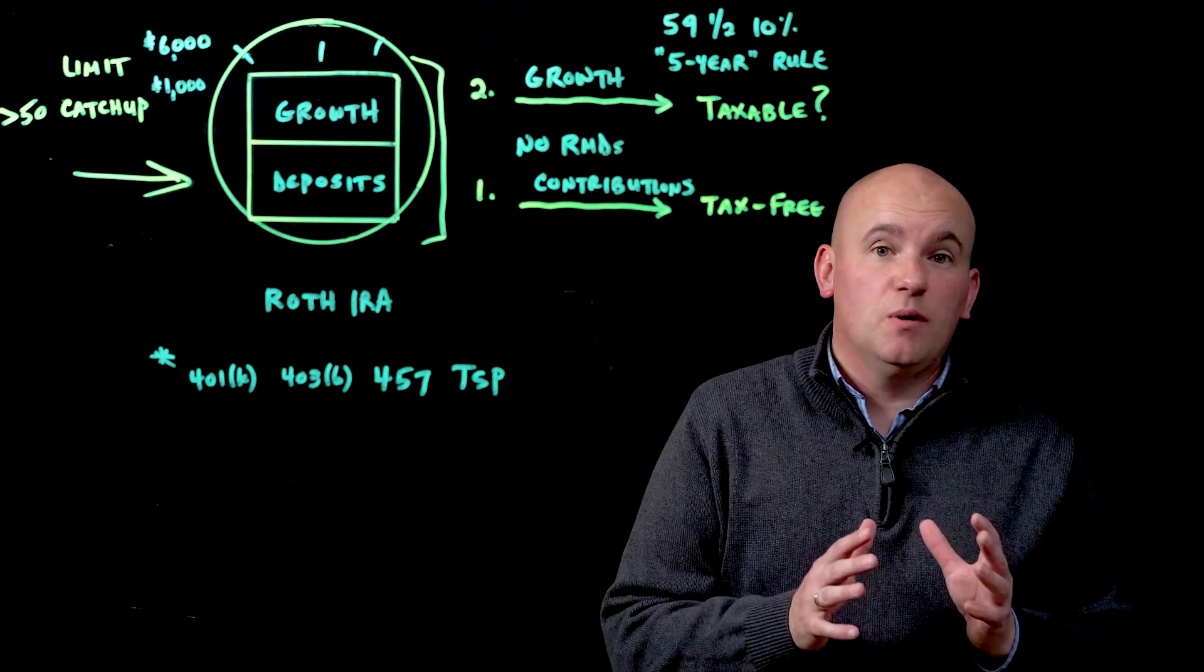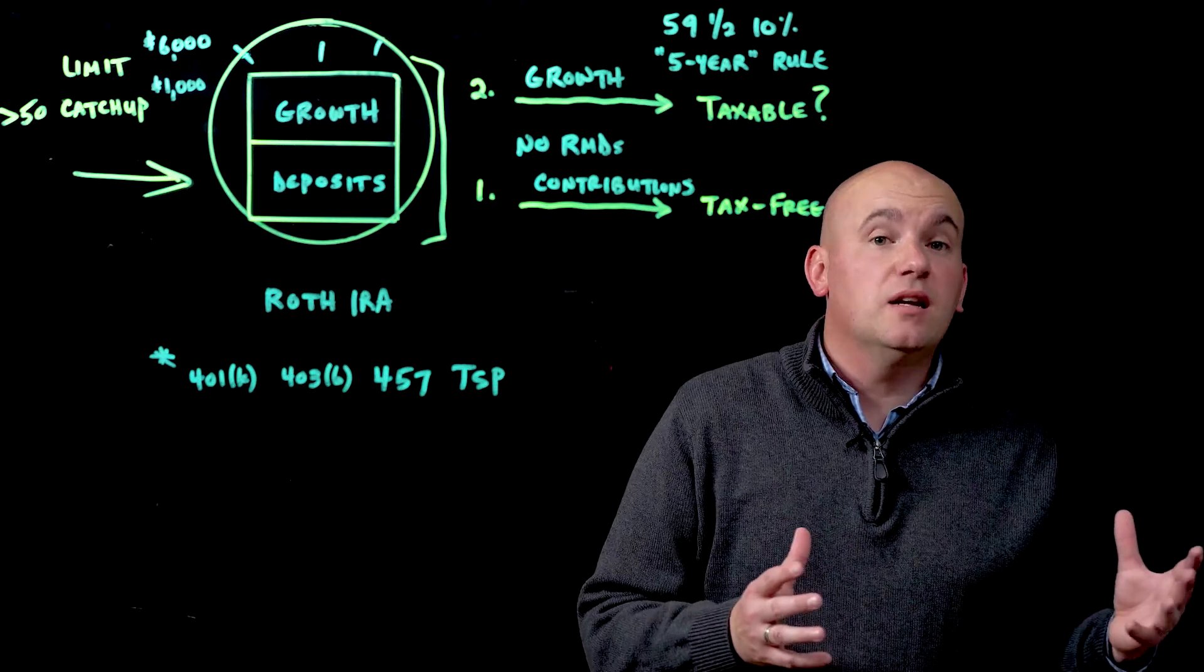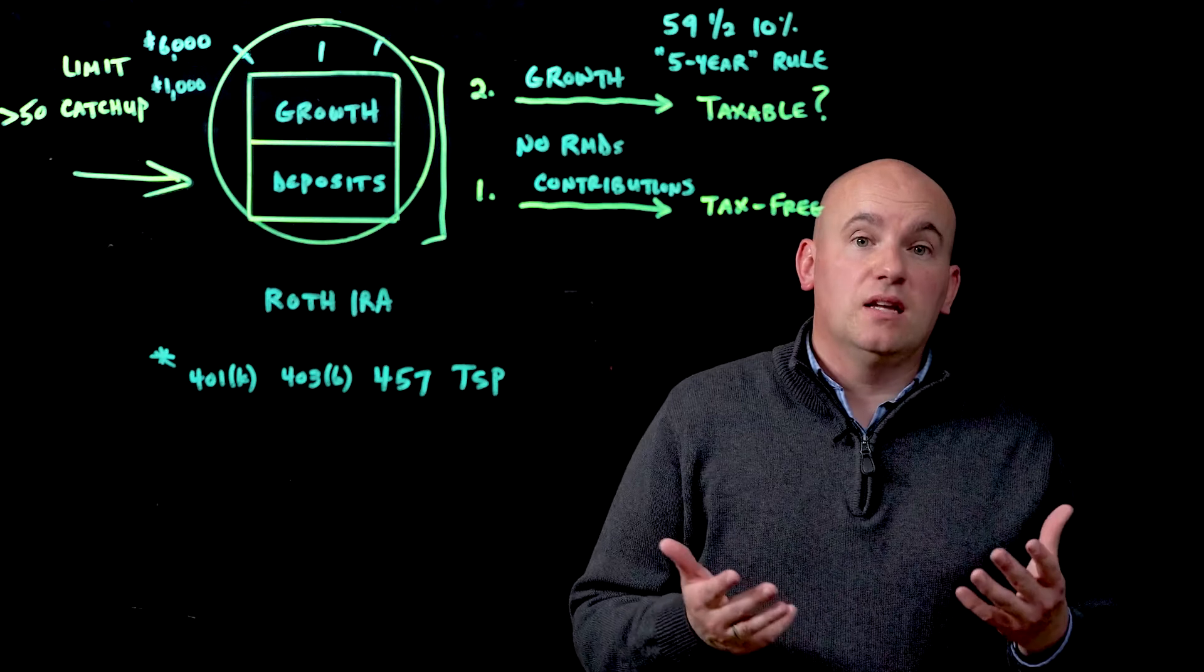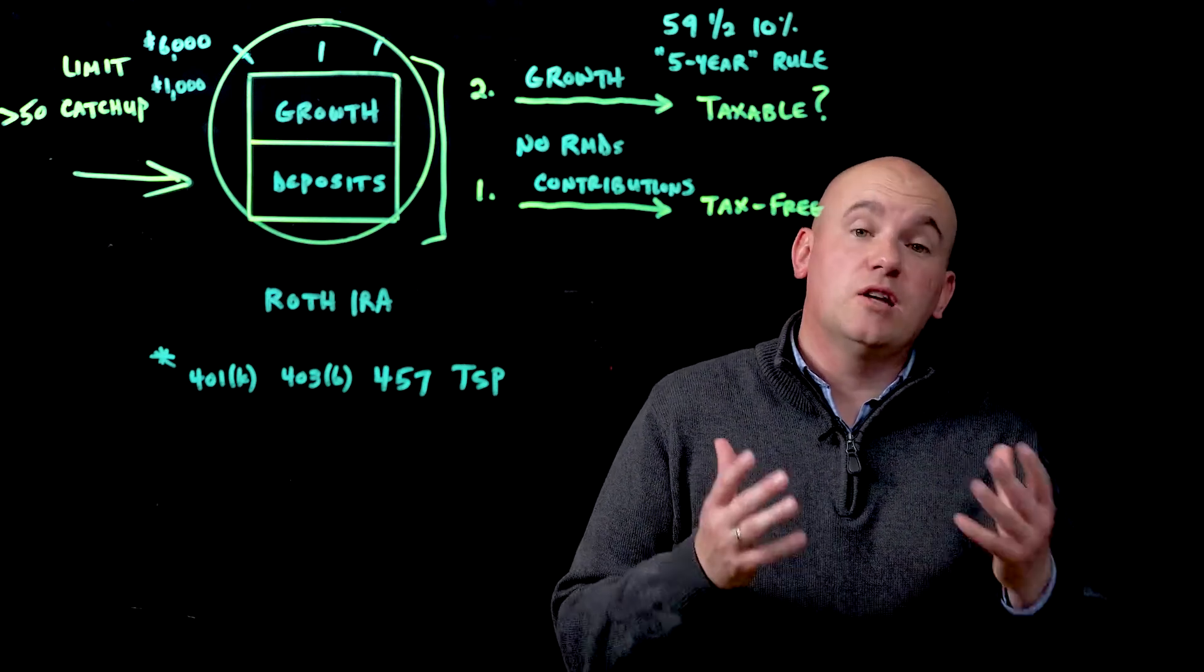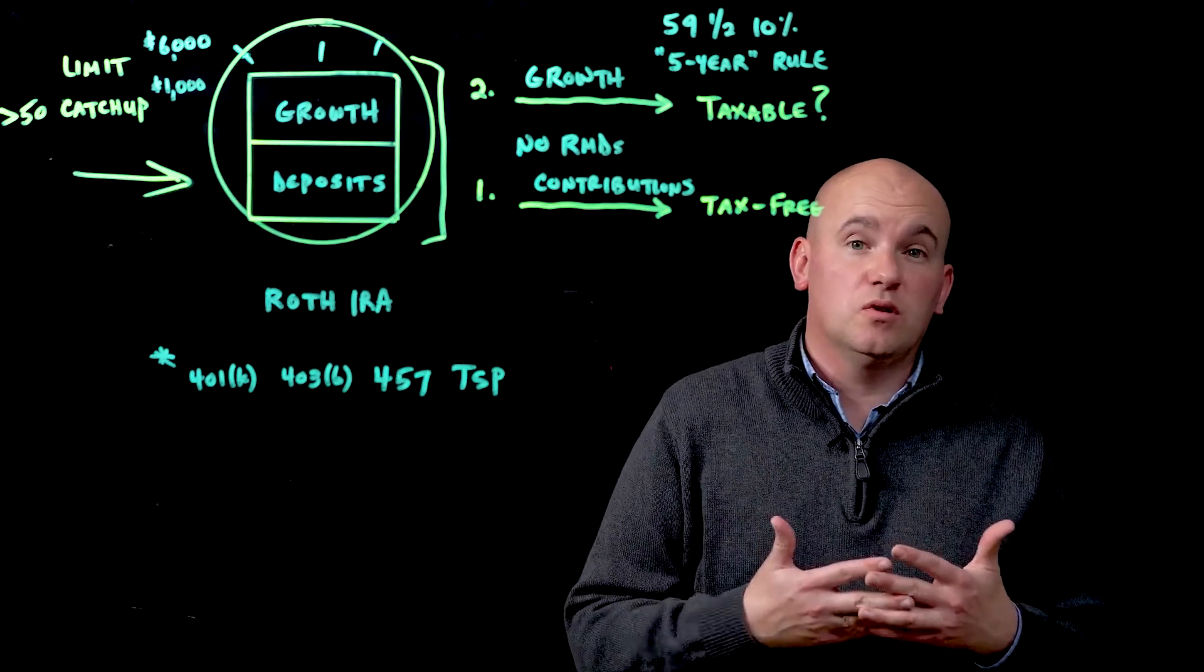Because this is retirement-focused and because there's a benefit to it, meaning these grow tax-free, the government has a limit on how much you can put in. So annually, you can put in $6,000 per person. And those over age 50 can add another $1,000. So $7,000 total for those over age 50.